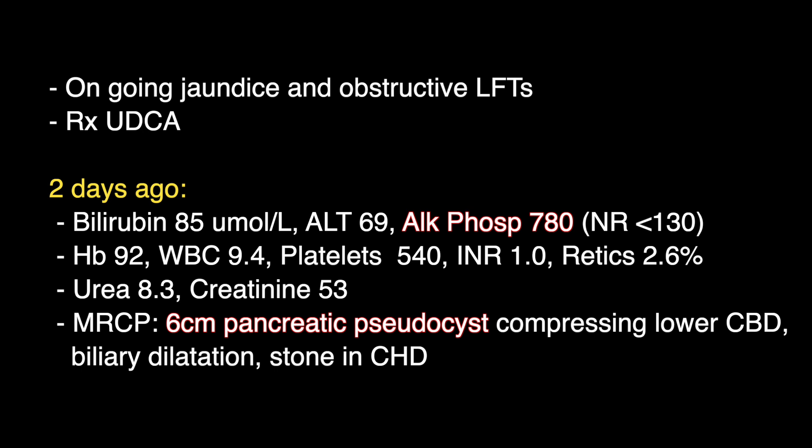The jaundice continued but the pattern became more obstructive with a marked elevation of the alkaline phosphatase. Ursodeoxycholic acid was commenced but did not make much of a difference. Two days ago, the bilirubin was 85 micromoles per litre with an alkaline phosphatase of 780, which is markedly elevated.